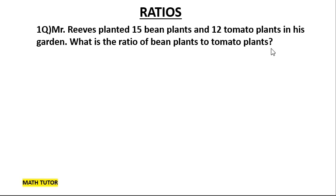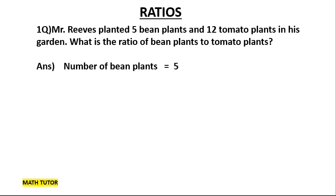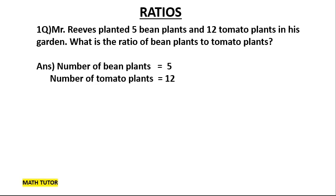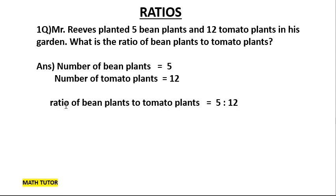Mr. Reese planted 15 bean plants and 12 tomato plants in his garden. What is the ratio of bean plants to tomato plants? He planted two types of plants and is asking for the ratio of bean to tomato. In ratios, the order is very important. Number of bean plants is 15, number of tomato plants is 12. So the ratio of bean plants to tomato plants is 15 is to 12. These numbers cannot be simplified further, so we stop here.